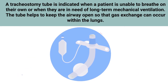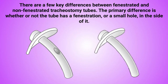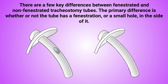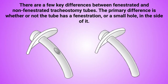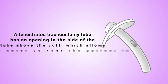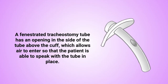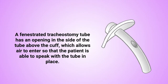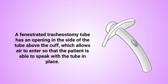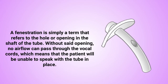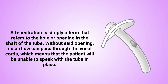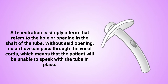The tube helps to keep the airway open so that gas exchange can occur within the lungs. The primary difference between fenestrated and non-fenestrated tracheostomy tubes is whether or not the tube has a fenestration — a small hole in the side. A fenestrated tracheostomy tube has an opening in the side of the tube above the cuff, which allows air to enter so that the patient is able to speak with the tube in place. A fenestration simply refers to the hole or opening in the shaft of the tube.